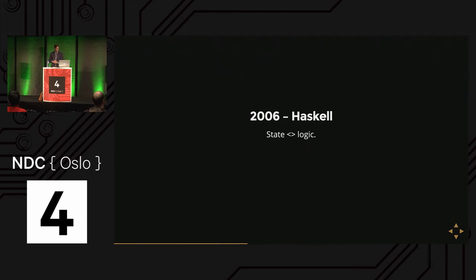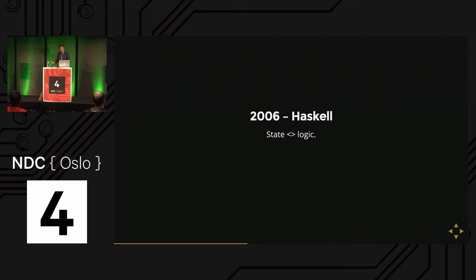In 2006 I started with Haskell because I started university, and I learned that you could separate state from logic. Previously — especially in the DDD book, which was quite object-oriented — you always put the logic into entities and aggregate roots, intermingling logic and state, which turned out to be hard. You really didn't know how you ended up in that state. But with Haskell you separate them: data flows through the logic instead of logic living in the data. If you have patterns, you make them type classes — that's the pattern you reuse when flowing data.